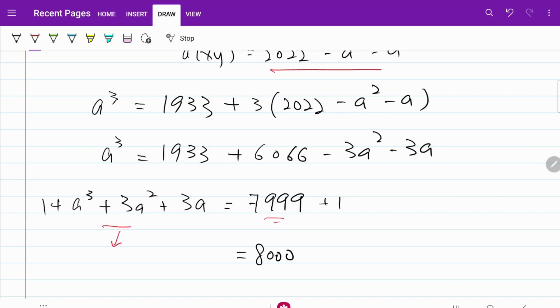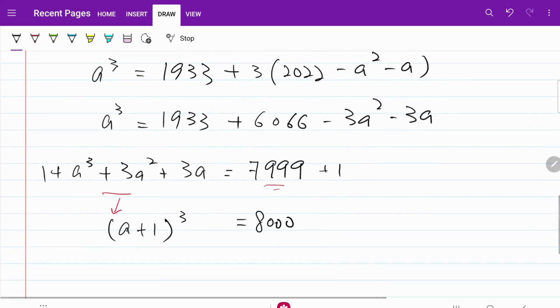this can be converted into a plus 1 cubed. And 8000 can be conveniently written as 20 cubed.